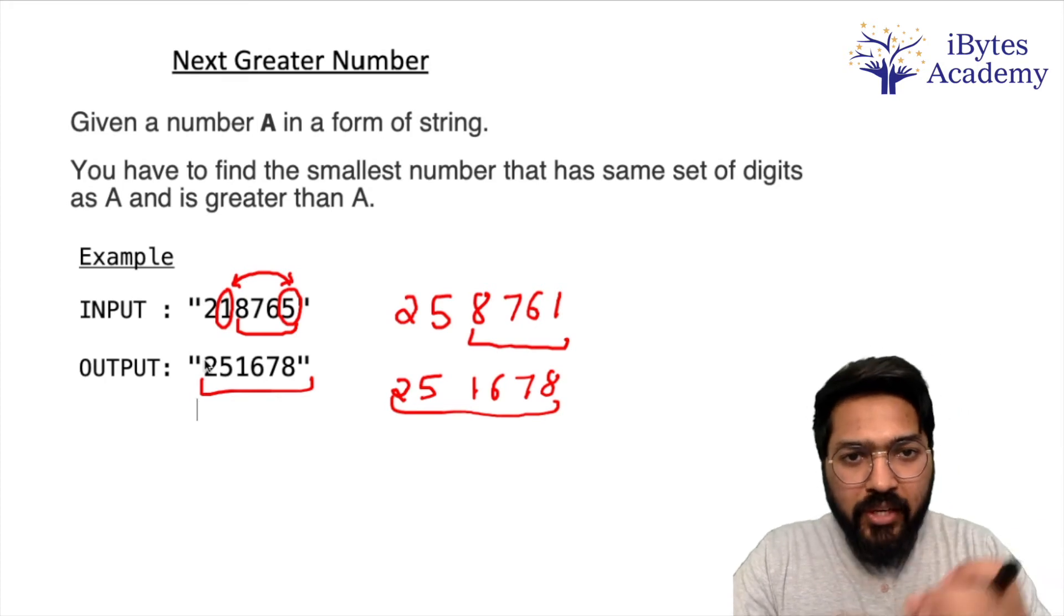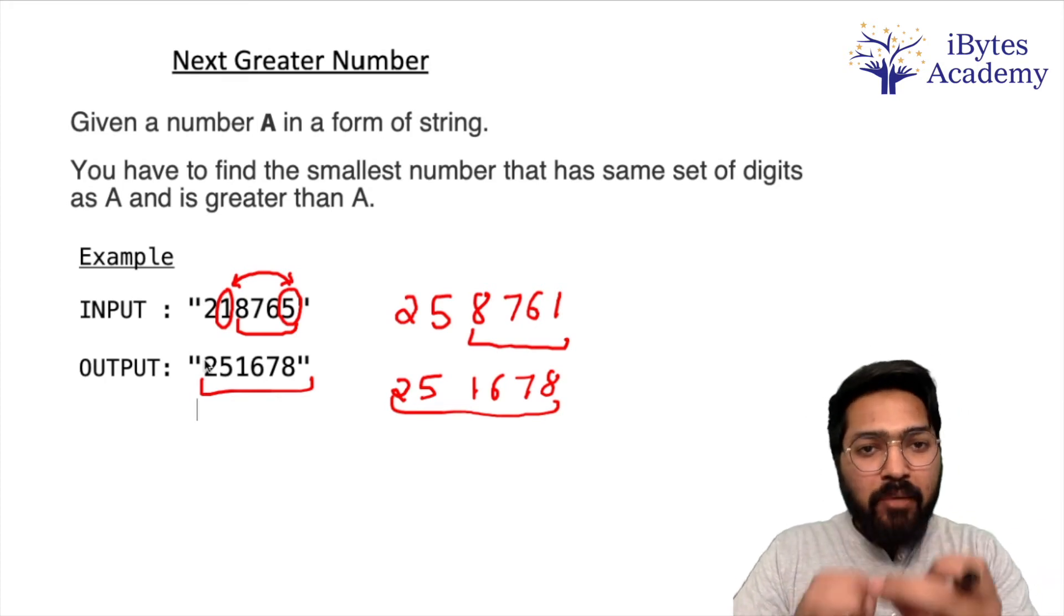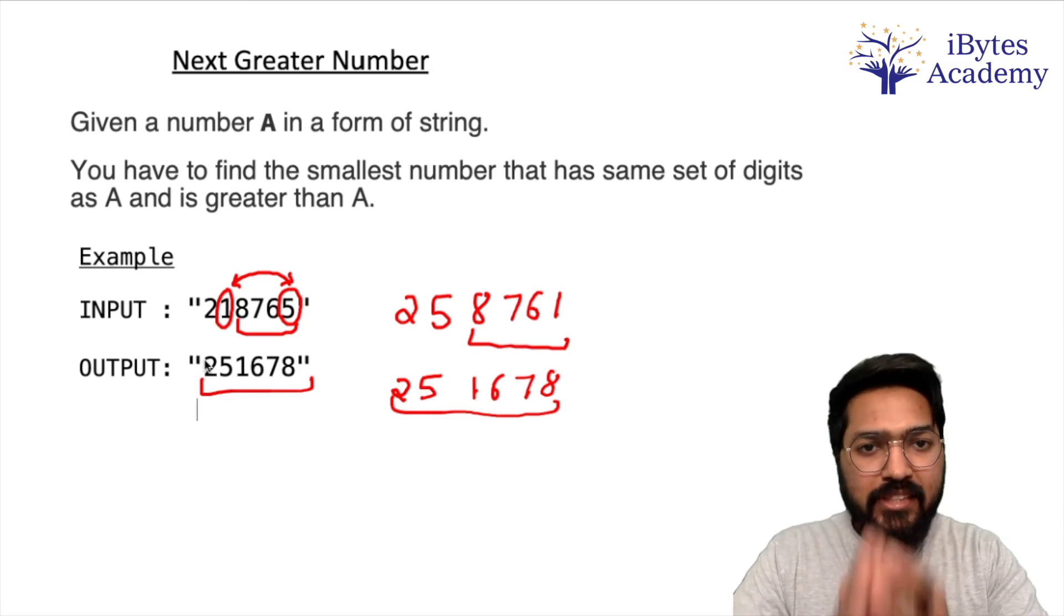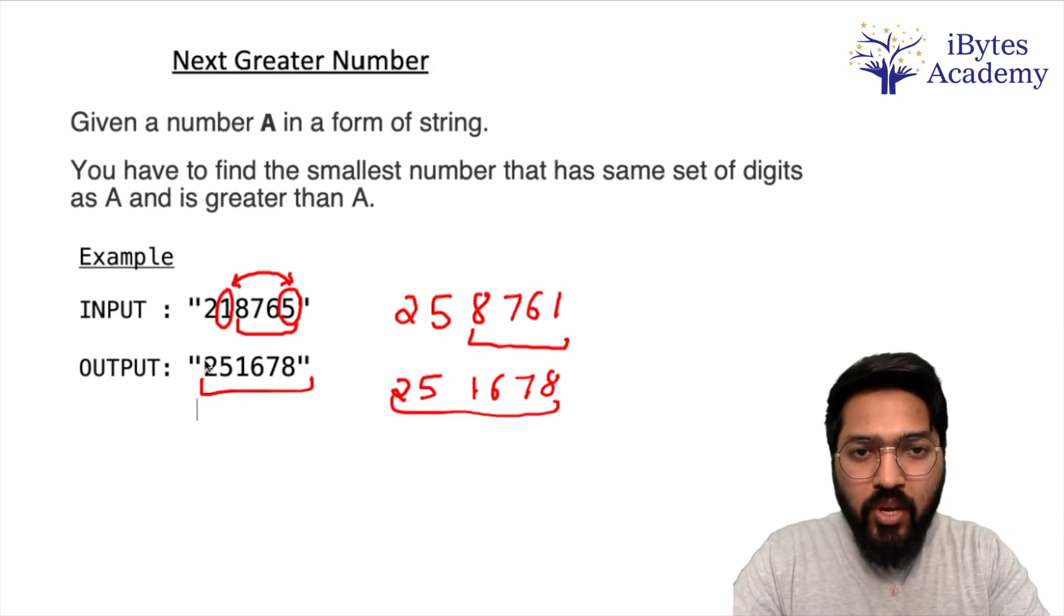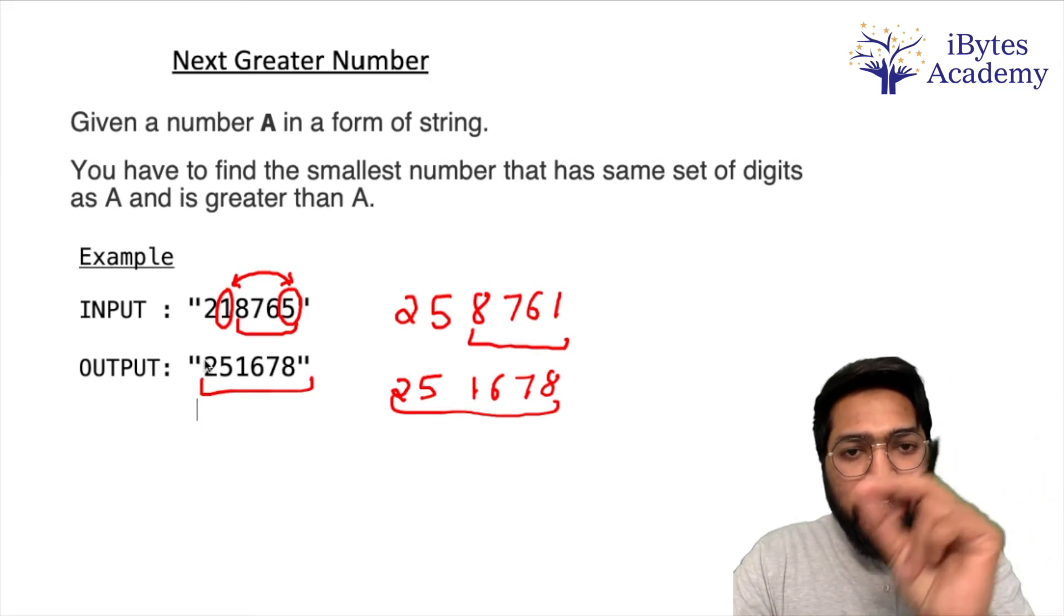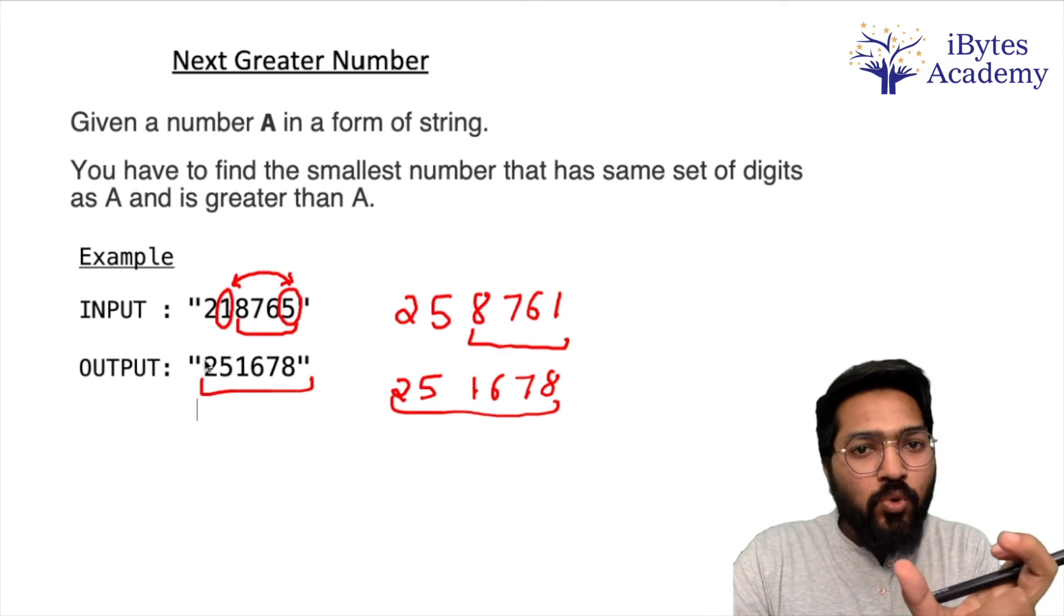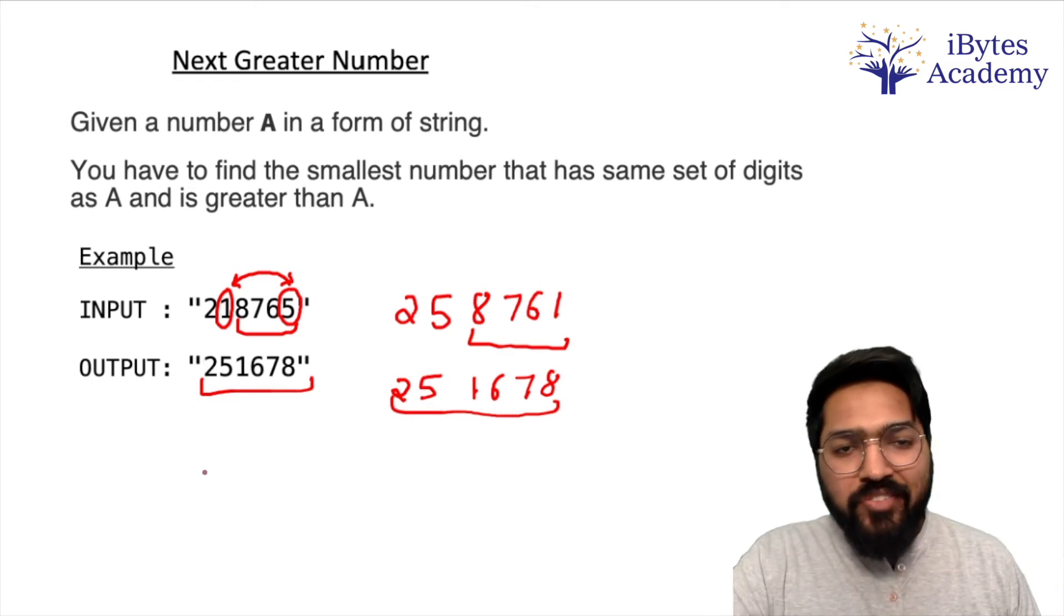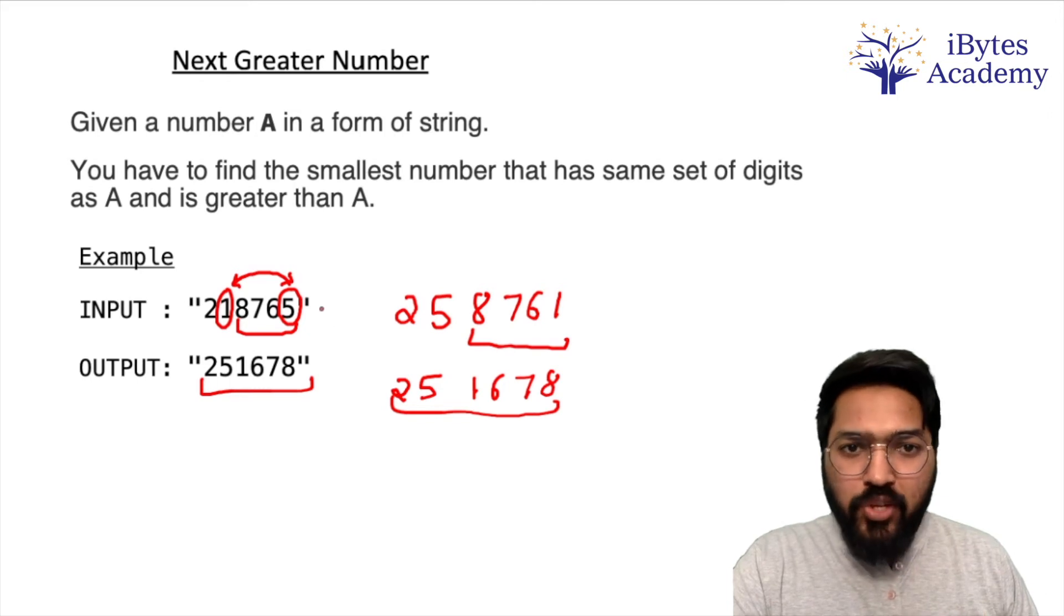So our algorithm is: we have to start from the back, and until we find a smaller number than the previous number, we have to keep moving forward. As soon as we find a smaller number, we will stop there. Then we will find the smallest number to its right, swap it with that position, and sort the remaining digits.